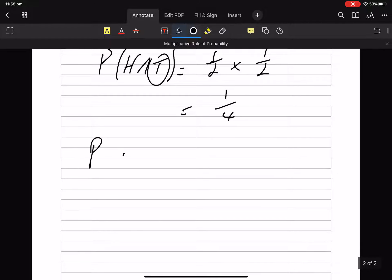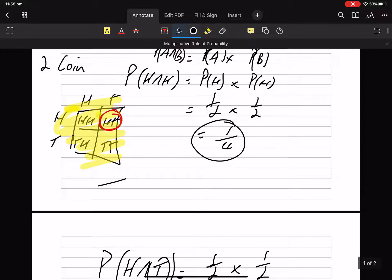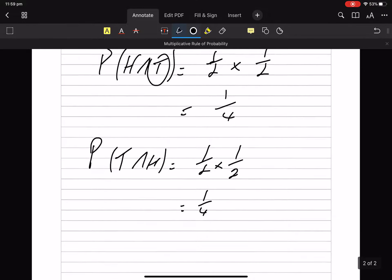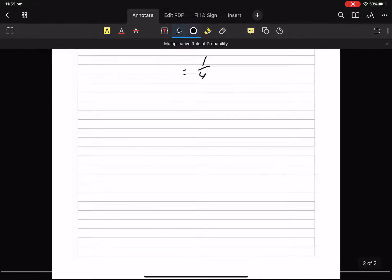So the probability of a tail first and then a head is still a half times a half, which is a quarter. But it's this other one. Then it's not that one. It's that one because the tail's first followed by the heads. How about one more?